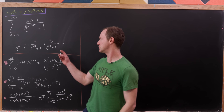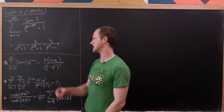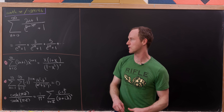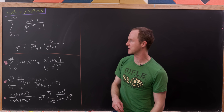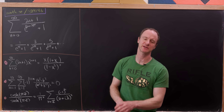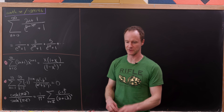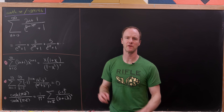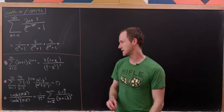Let's observe that the first few terms look like this: we have 1 over e^π + 1, plus 3 over e^(3π) + 1, and so on. That just gives you a feel for what's going on here.